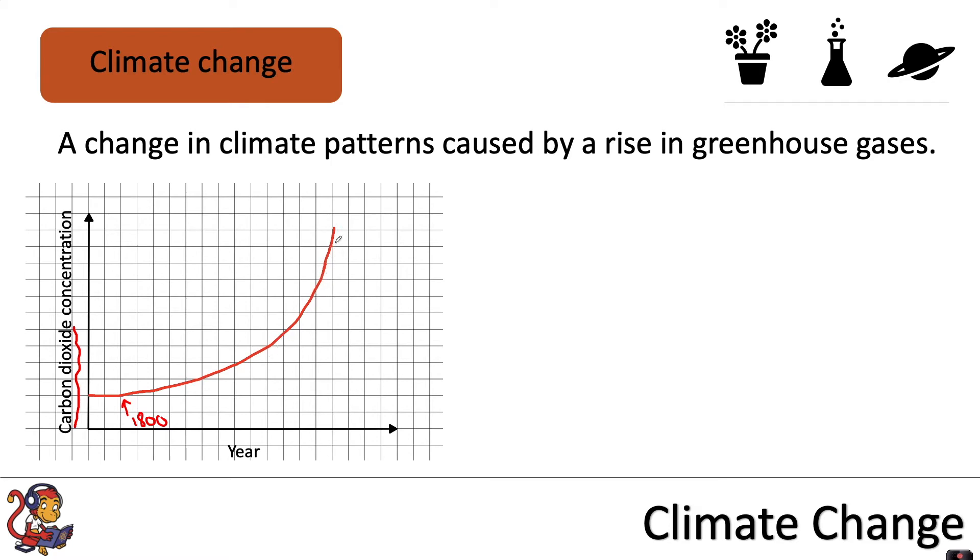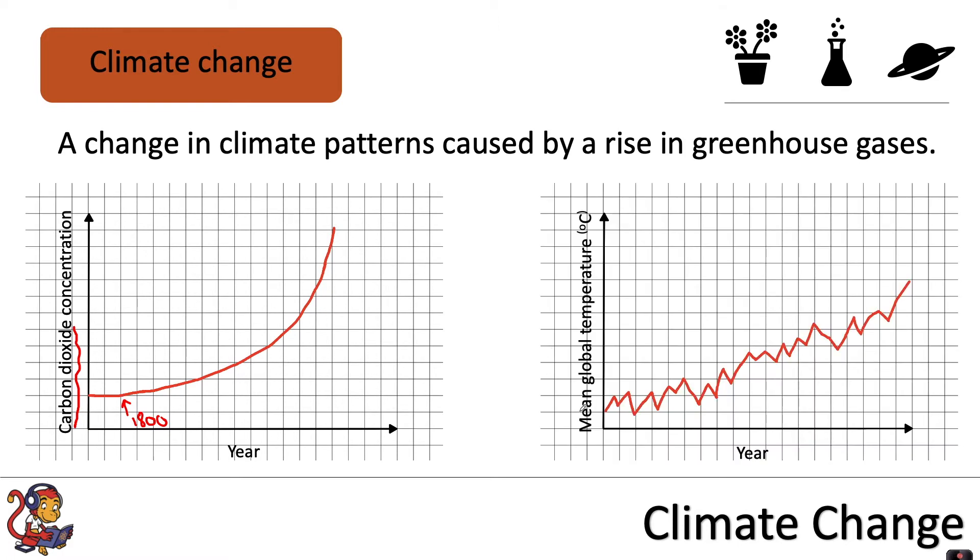To correlate with this, we also saw an increase in mean global temperature. Although this global temperature fluctuates, which means it goes up and down over time, the overall trend is an increase in mean global temperature.